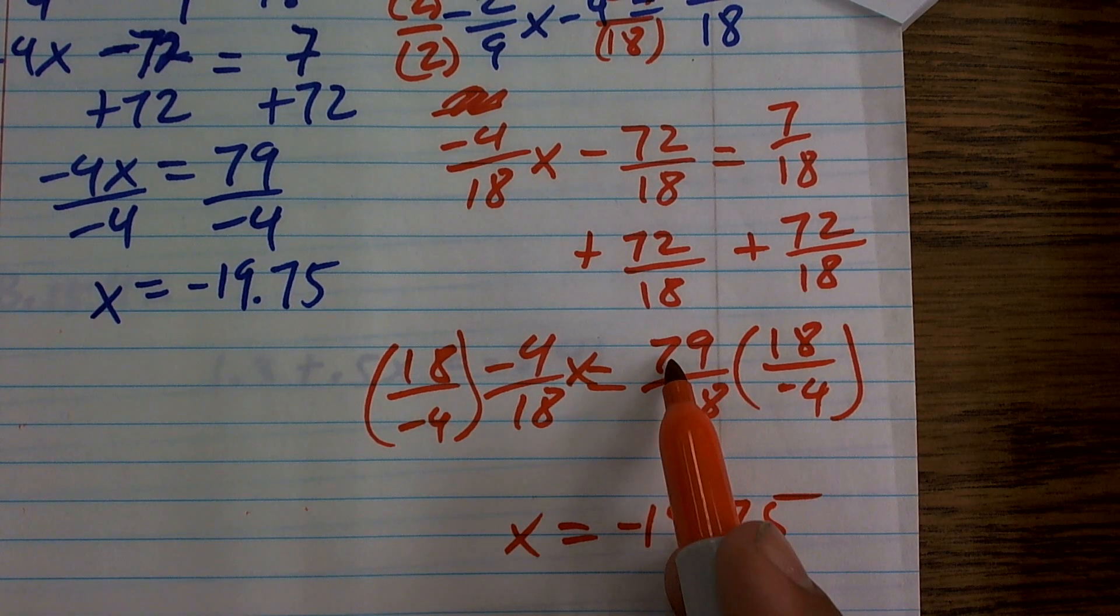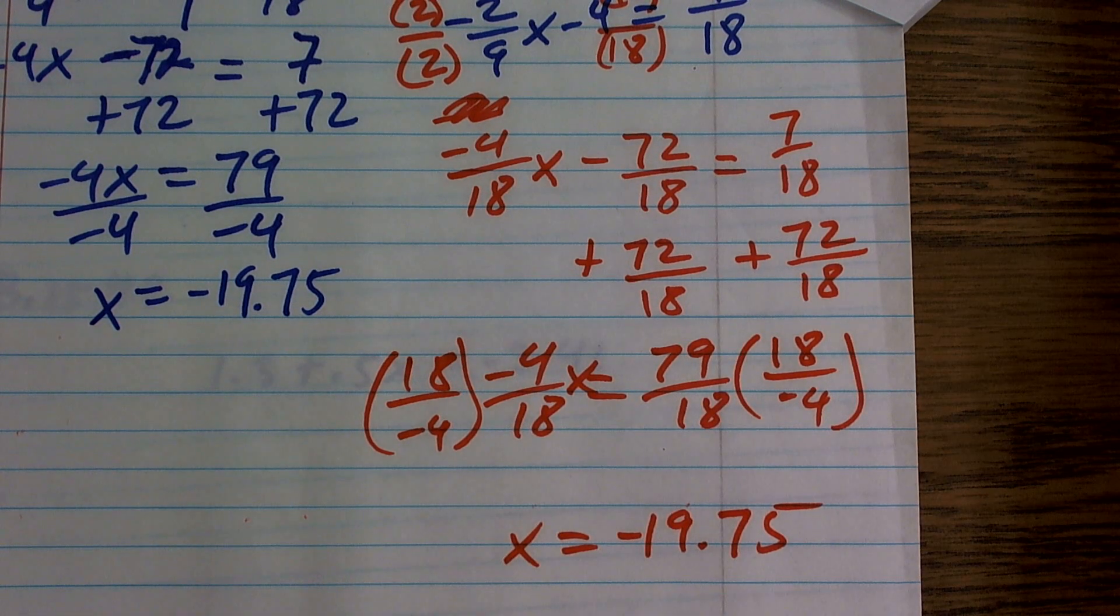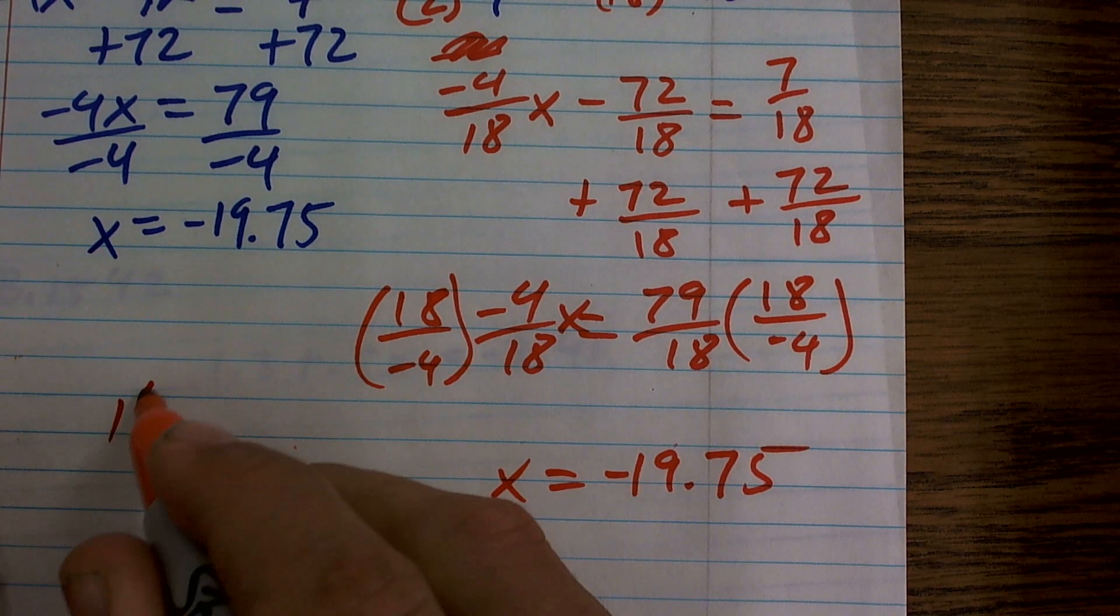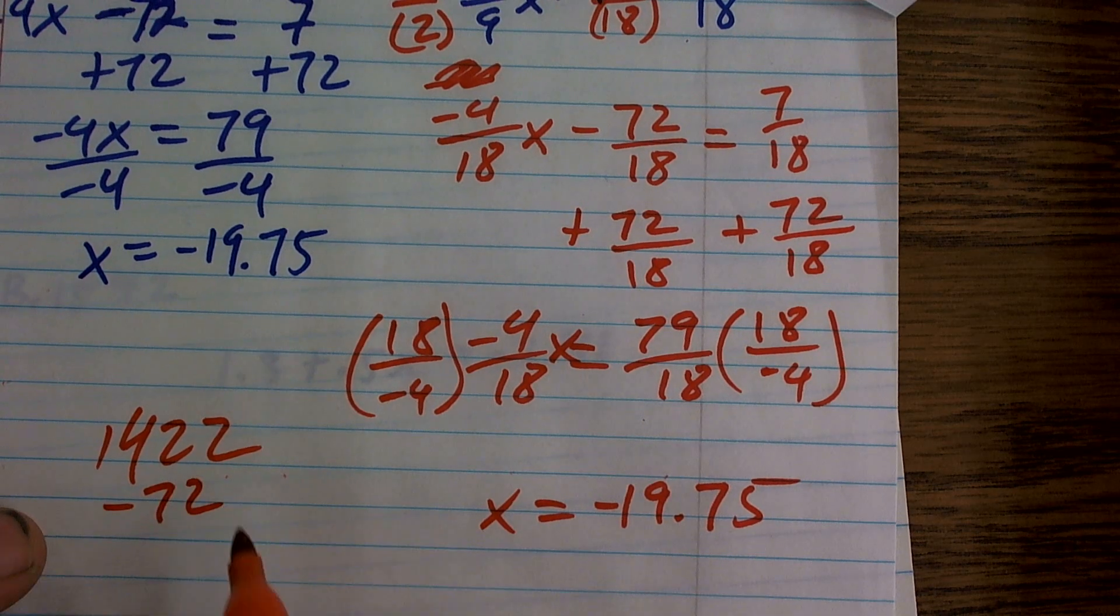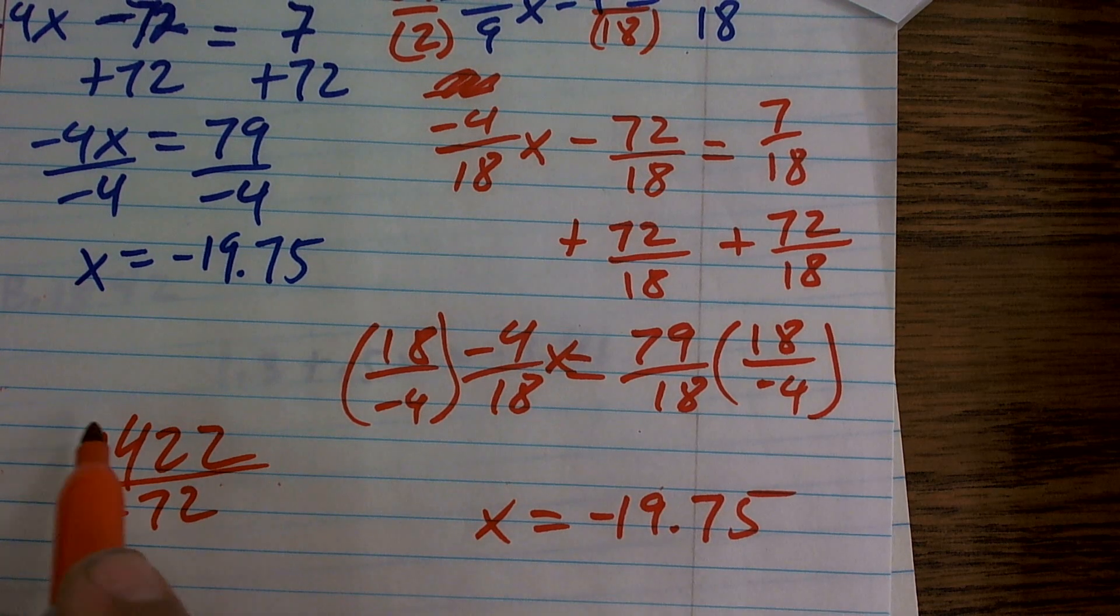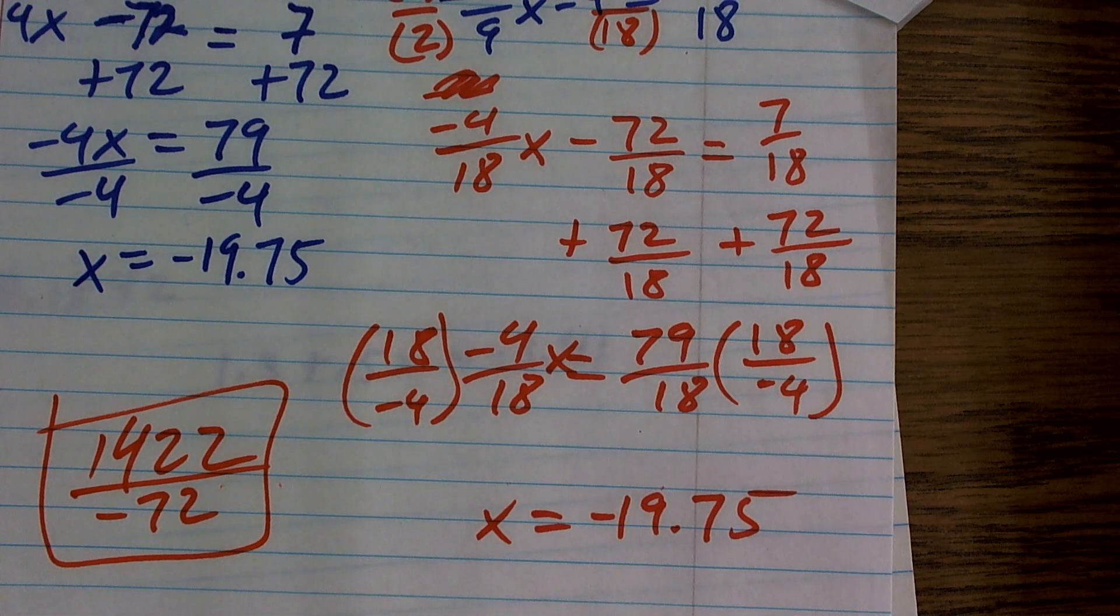Just multiply 79 times 18 and 18 times negative 4. And then divide those two values. And you'll end up getting negative 19.75. All right. You know what? I just don't trust anybody. So I'll just show you what it is. 79 times 18 equals 1,422. 18 times 4 is negative 72. So 1,422 divided by negative 72 is negative 19.75. All right? So there you go. No more whining about it. And I did it in three minutes with a little extra. You got it.